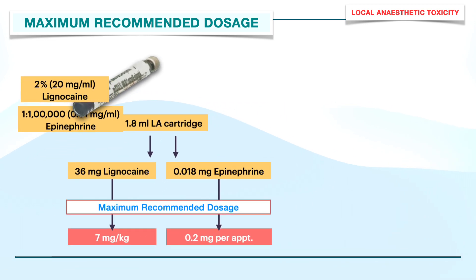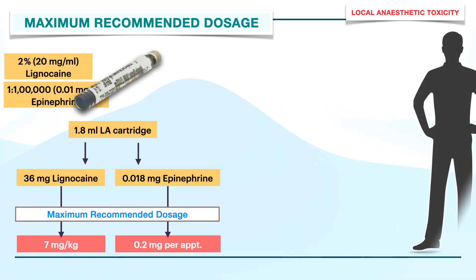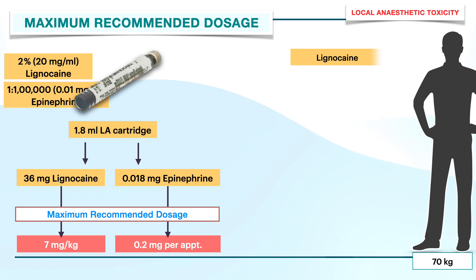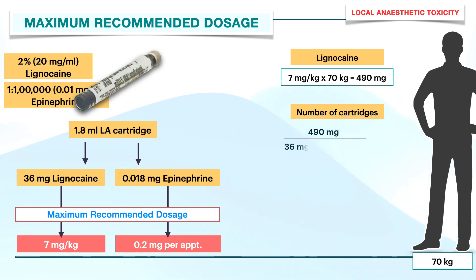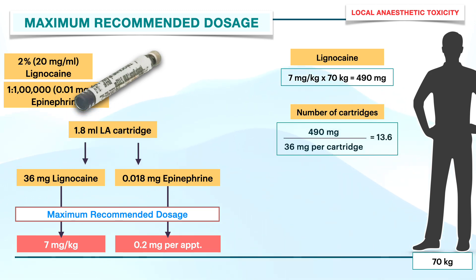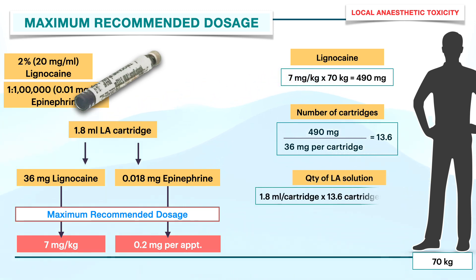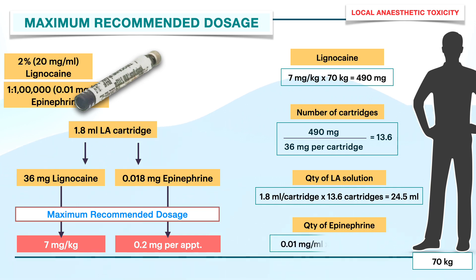For a healthy adult weighing 70 kg, the maximum recommended dose of lignocaine comes to 490 mg. As 1 cartridge contains 36 mg lignocaine, this equates to around 13 cartridges. The total quantity of local anesthetic comes to around 24.5 ml and that of epinephrine is 0.24 mg.